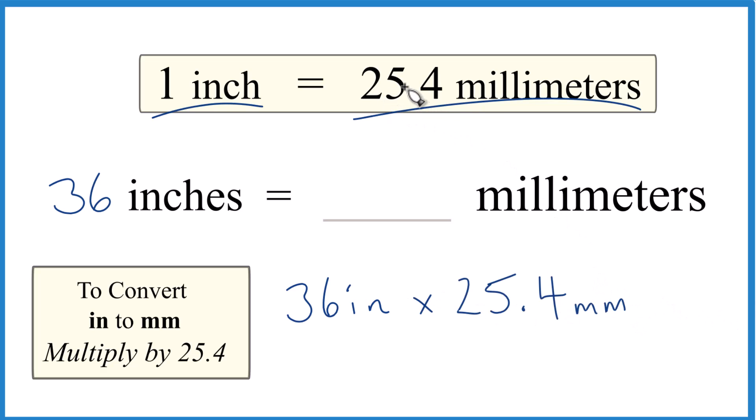And remember, we said there's 25.4 millimeters in one inch, so millimeters per inch.